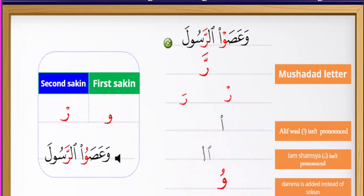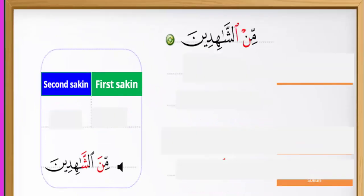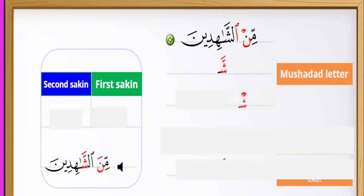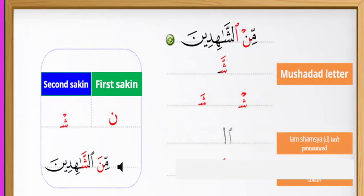Dhamma is added in the state of sukun: 'wa'asaw ur rasul.' Example: 'min ashahideen.' The mushaddad letter — sheen is a dabar. First sheen has sukun, second sheen has fatha. It is 'min ashahideen.' Sheen means dabar. Not 'mena al-shahidin.'